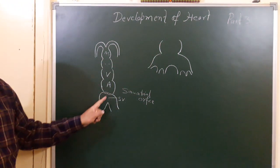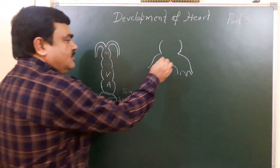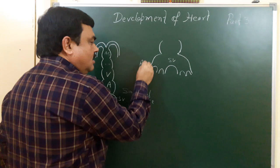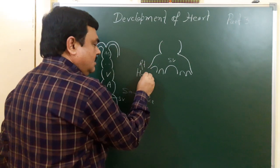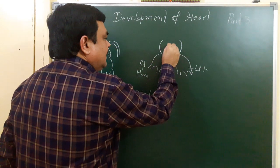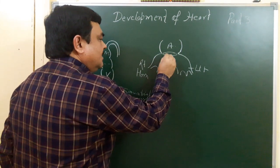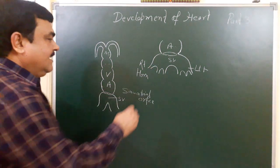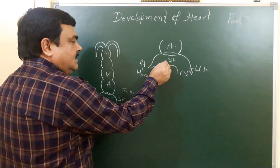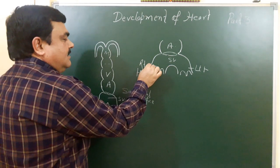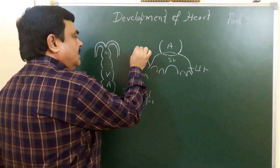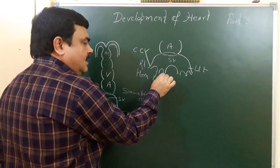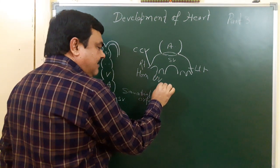This is the atrial chamber and this is the sinus venosus. This is the central part of the body of the sinus venosus, and these are two horns — this is the right horn and this is the left horn. This is the atrial chamber and this is the sino-atrial orifice on the right side. This right horn receives three veins: the right common cardinal vein, right umbilical vein, and right vitelline vein.